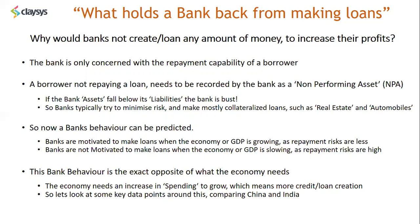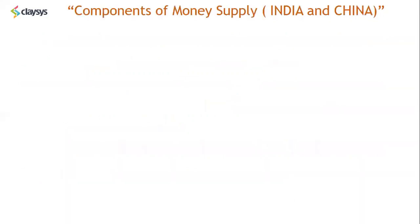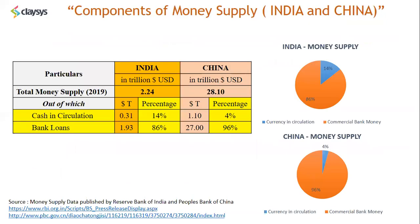Let's look at some key data points comparing China and India — specifically the components of the money supply. The money supply is the total money available for spending in the economy. In 2019, the total money supply in India was 2.24 trillion dollars. The cash or currency created by the Reserve Bank of India made up only about 14 percent of the total money supply — 86 percent of the money supply was and is bank loans or credit.